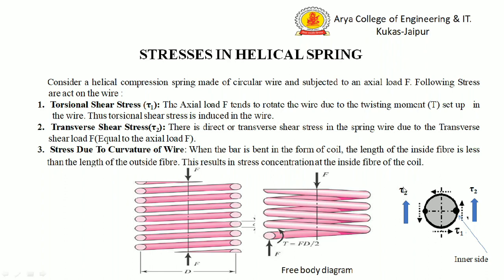It is very clear from this diagram that at the inner fiber — this is the inner fiber and this is the outer fiber of the section considered for equilibrium — at the inner fiber, the torsional stress Tau 1 (represented by the dotted line) and Tau 2 are both in the same direction.